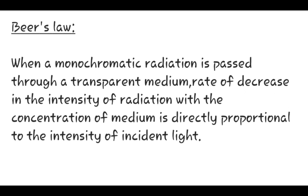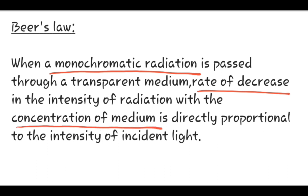Now let us see what Beer's Law is. Beer's Law says that when monochromatic radiation is passed through a transparent medium, the rate of decrease in the intensity of the radiation with the concentration of the medium is directly proportional to the intensity of the incident light. Thus, as the concentration of the medium increases, the intensity of the transmitted radiation decreases.